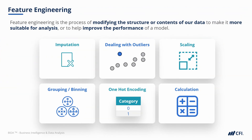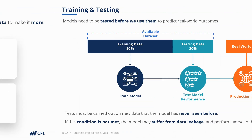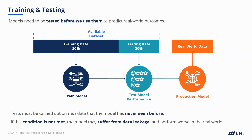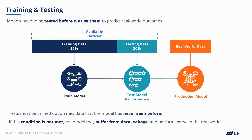On the feature engineering side, we can ask all sorts of questions about how to improve our dataset for the analysis we're doing — whether it's outliers, scaling, grouping, or one-hot encoding. We've seen that training and testing is essential to model performance; we must test our models on data they haven't seen before.